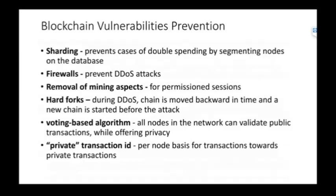To prevent these vulnerabilities, there's sharding, where only certain nodes of the database update, which increases validation speed to prevent double spending. Firewalls can prevent DDoS attacks. We can remove mining aspects if a blockchain has certain permissions. Hard forks mean that in case of a DDoS, we split and move backwards in time, and a new chain is started before the attack. A voting-based algorithm increases privacy for public transactions, and private transaction IDs make transactions private as well.